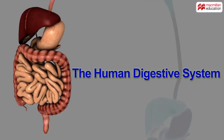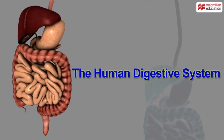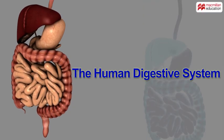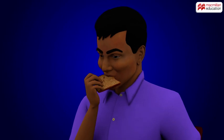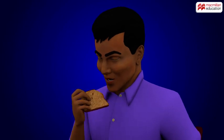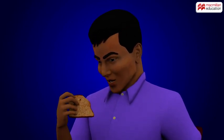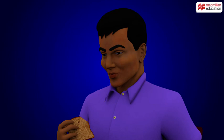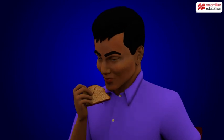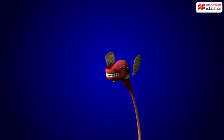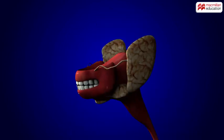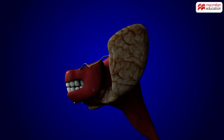The Human Digestive System. Digestion in human beings starts from the mouth, when we bite on a piece of food and start chewing it. In the mouth, the food is mixed with saliva, which is secreted by three pairs of salivary glands.